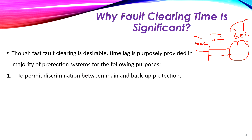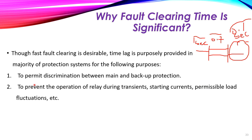Another reason why we cannot use a very small time: since fast relay and circuit breaker times are only a few cycles, why do we provide 0.1 seconds? Because we also need to prevent the operation of the relay during transients, starting currents, and permissible load fluctuations.